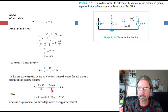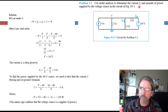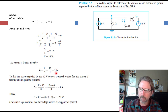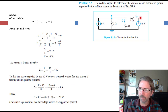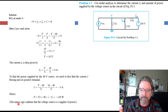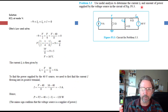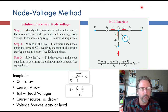Now for post-processing: we need IX, which we already have an expression for — V over 4 — so plugging in 16 volts gives IX equals 4 amps. For the power supplied by the voltage source, we need current I from Ohm's law: V minus 40 over 8, which gives negative 3 amps. Power is voltage of the source times current: 40 times negative 3 equals negative 120 watts. By sign convention, a negative value means the source is supplying power — so it all works out.